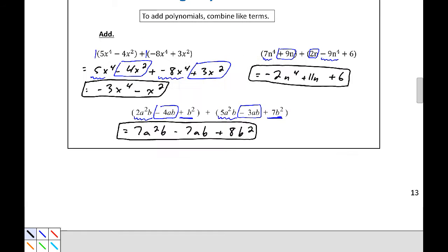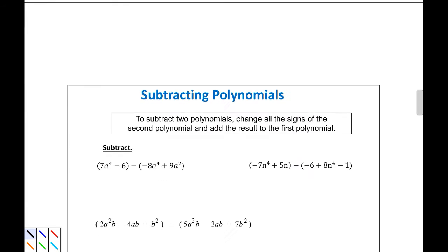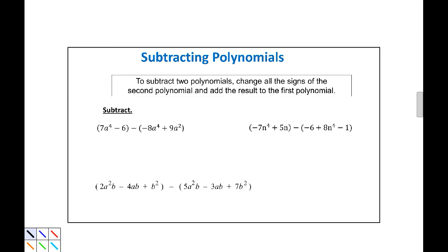Now let's subtract a few polynomials. To subtract, we can, again, practically, change all the signs of the second polynomial and then add the result to the first polynomial. That would be because, as we stated earlier, subtraction just indicates changing the signs — so it's the opposite of that second polynomial.